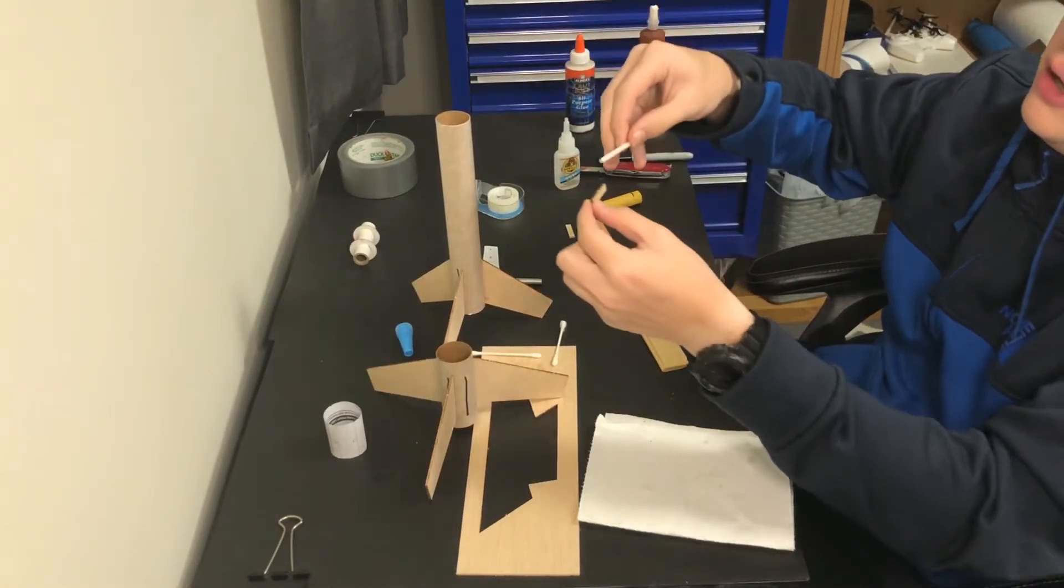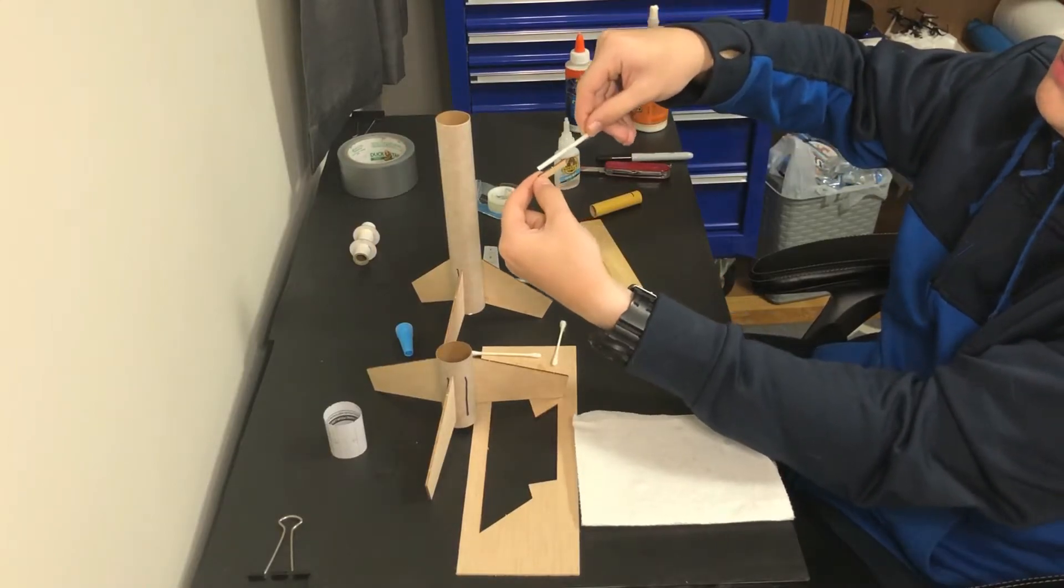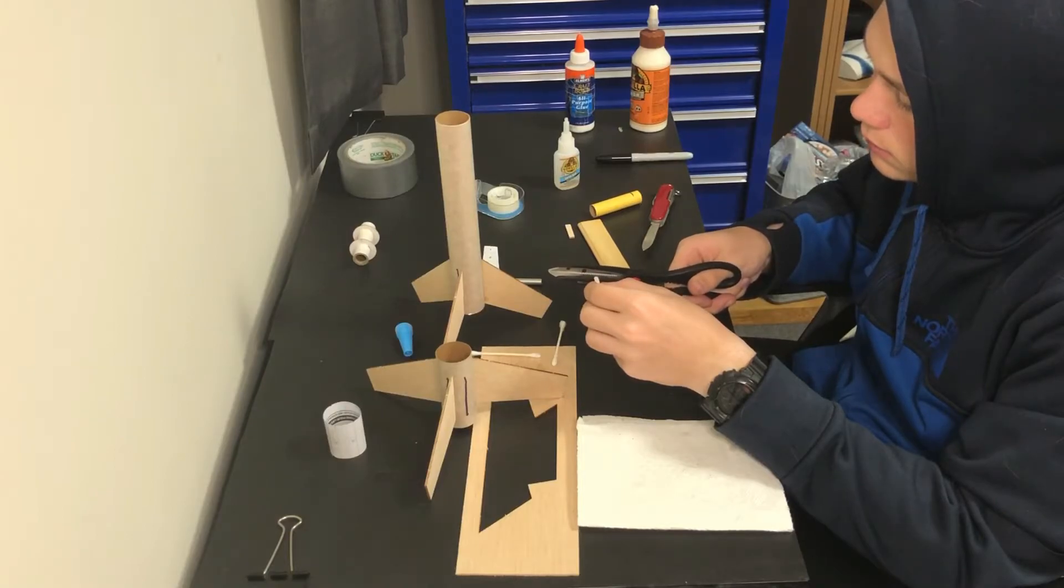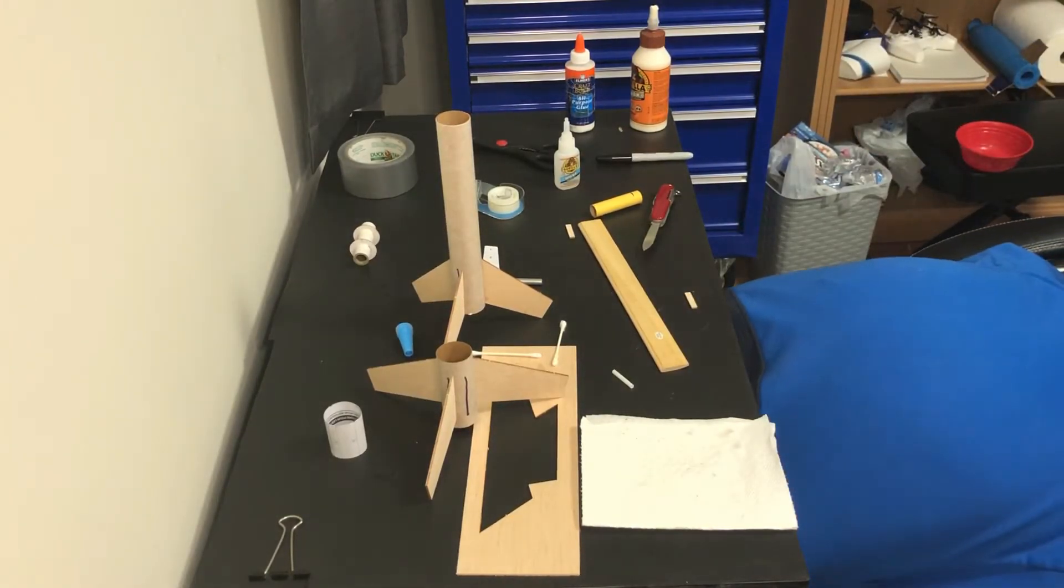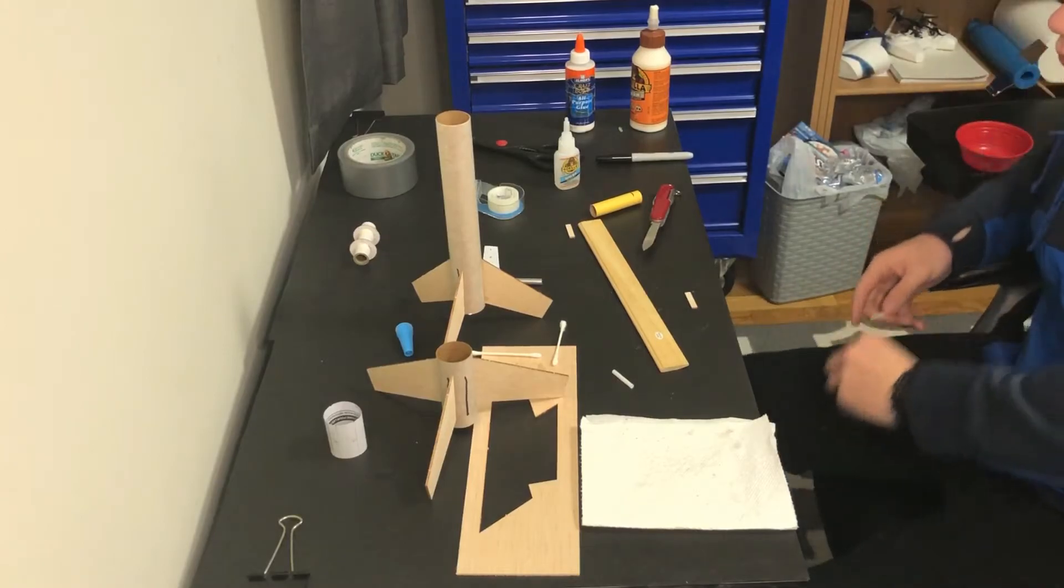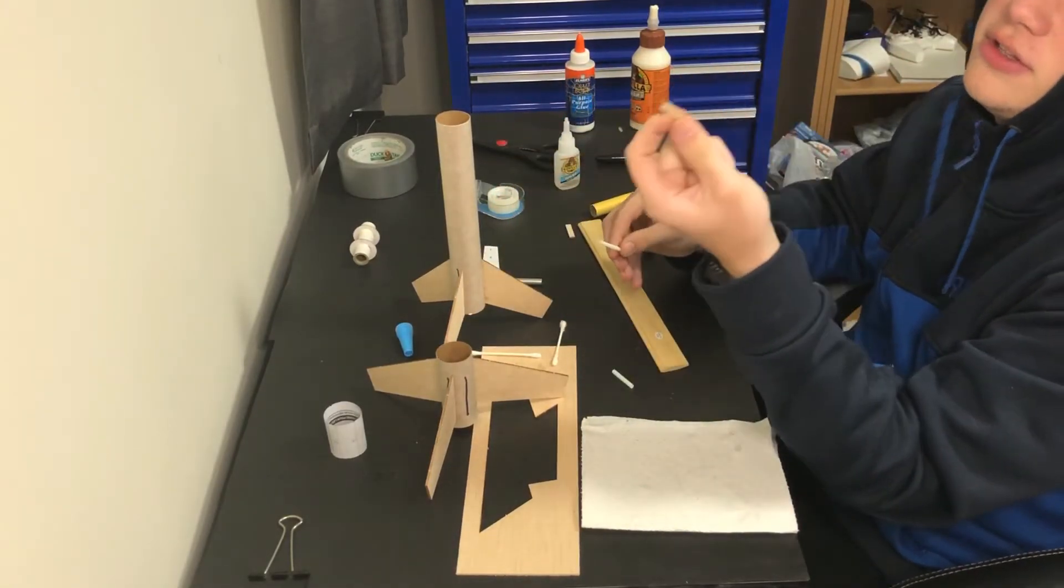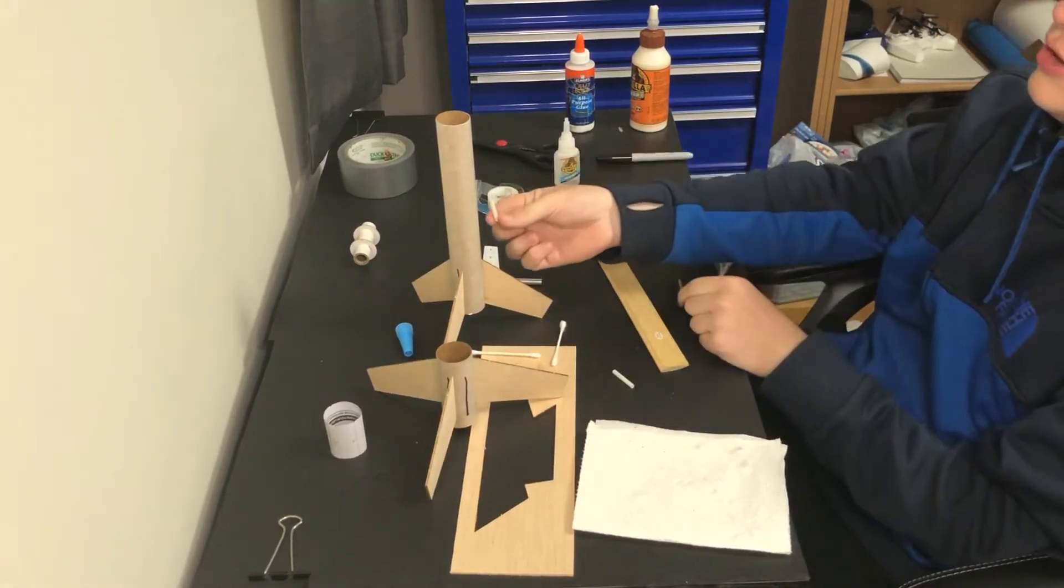Grab your straw and cut it in half. You can use these to measure where half is. You can glue the straws onto here. If you broke these, don't worry about it, you can just glue the straw straight onto it.